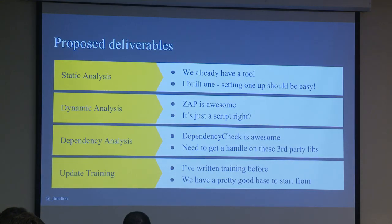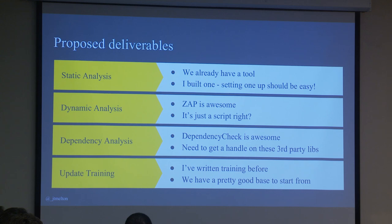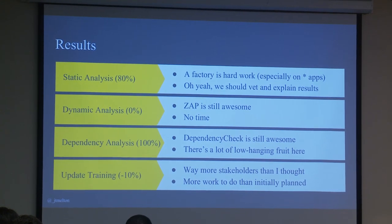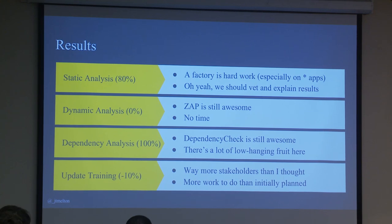Q2 is when the stuff really started happening. I'm fairly technical, so I thought — how hard can this be? I worked at a static analysis company. I should have static analysis knocked out in a quarter. Dynamic analysis, less so my world, but I can call Simon and he'll help me set up Zap automation. Dependency check should be easy. But static analysis is actually pretty hard when you have dozens or hundreds of apps you have to set up a platform for.